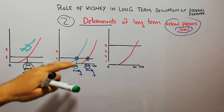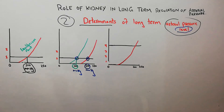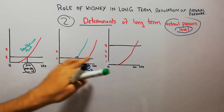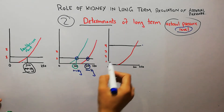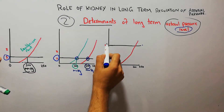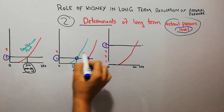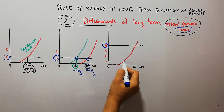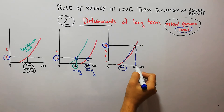The second determinant for changing the arterial pressure level is changes in the intake of salt and water. In this second diagram, the renal functions are normal and the renal output curve is exactly normal, but the intake of salt and water has increased from normal to up to four times. As the intake of salt and water has increased four times, the equilibrium point has shifted from 100 mmHg to a new level of around 200 mmHg.